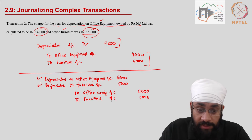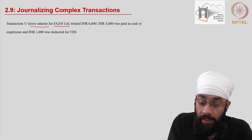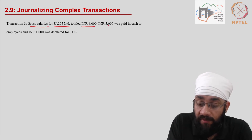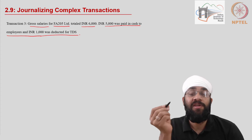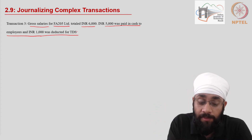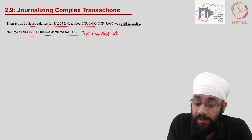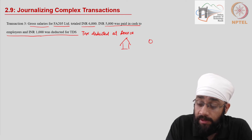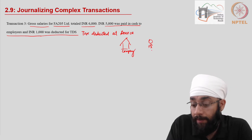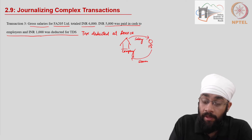Transaction 3: gross salaries for the company totaled 6,000. 5,000 was paid in cash to employees and 1,000 was deducted as TDS — tax deducted at source. When you work for an organization, the employee provides services to the company and the company provides salary to the employee.